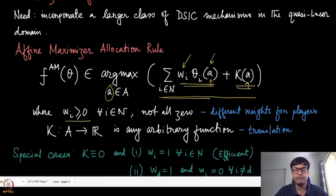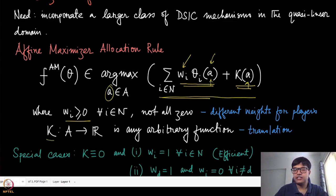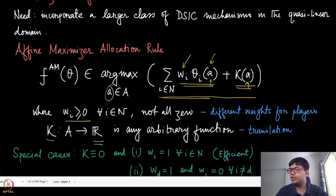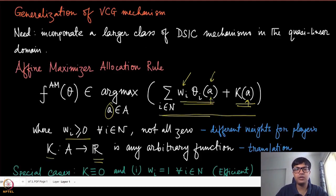Of course nobody is given a negative weight, but all of them cannot be simultaneously zero. Kappa again is a function with no restriction on being positive or negative — it can take any real number values. Now we can easily relate this to the classical VCG mechanism where we are trying to find the efficient allocation.